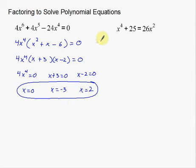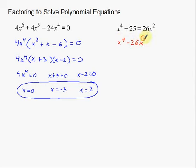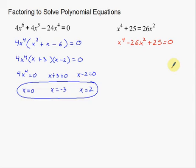If you want to solve a polynomial equation, this next one is a bit out of order. We want everything set equal to 0 like the first one. So the first thing I'm going to do is subtract 26x squared over to the other side so that I have everything on one side. This is going to involve a slightly different type of factoring than the first example.